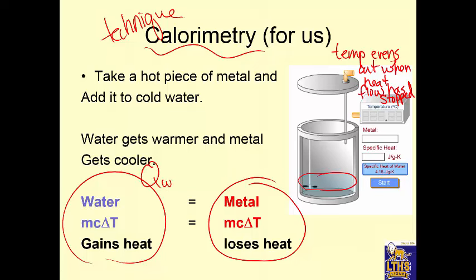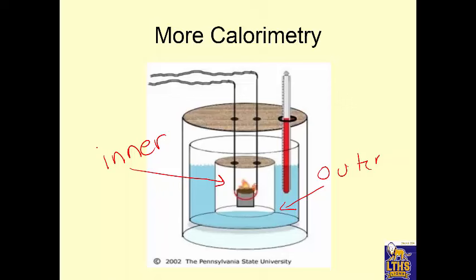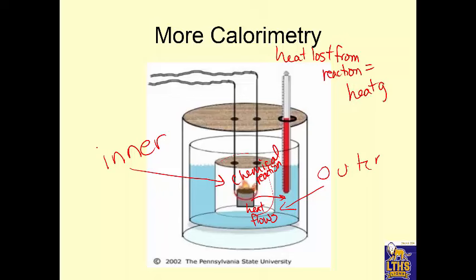Q of water equals Q of metal because the heat from the metal goes into the water in equal amounts. In a bomb calorimeter, a chemical reaction occurs inside a container surrounded by water. The heat produced by the reaction flows into the water. By measuring the temperature change of the water and knowing its mass and specific heat, we can figure out how much heat flowed. Heat lost by reaction equals heat gained by water.